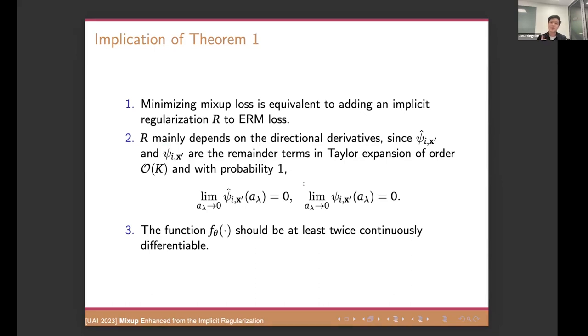Then, mixup loss is equivalent to adding an implicit regularization term R. The R is defined in this equation. So here, the J stands for the Jacobian matrix. The circle times notation stands for the Kronecker product. So it may looks very scary, but don't worry. We will just discuss the implications. Okay. So, okay. I just talked about the point one, right? Minimizing the mixup loss is equivalent to adding an implicit regularization R to the ERM loss.